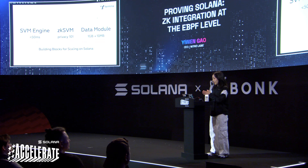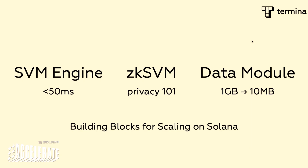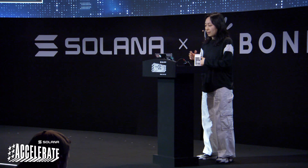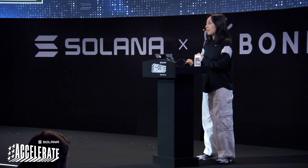Taking a quick step back, I want to contextualize the ZK SVM work in the context of the broader work that we at Nitro are doing for our Termina platform. Our goal is to create building blocks for scaling on Solana. If your app is running into scaling limits with execution, data, or throughput, we want to help you scale without creating a separate network like traditional rollups or app chains. We have three main network extension modules. Today I'll be diving into the ZK SVM, but we also have the SVM engine — a dedicated SVM engine instance to offload compute during congestion — and the data anchor, which lets you put a lot of data on-chain at a fraction of the cost.